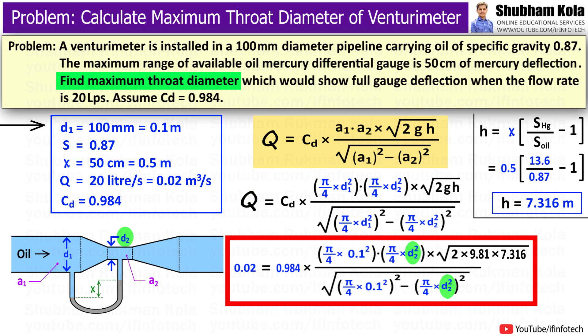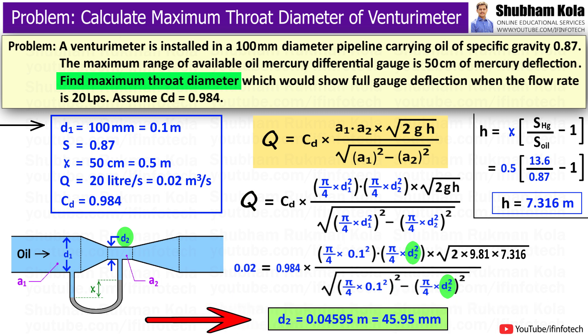Therefore, by calculating this, we got maximum throat diameter of venturimeter as 45.95 mm.